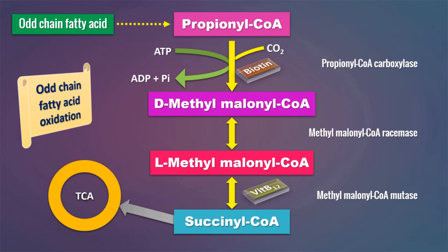So to summarize: odd chain fatty acids not only generate acetyl-CoA, but also yield the shortest odd chain product — the 3-carbon propionyl-CoA. This propionyl-CoA, via propionyl-CoA carboxylase (a biotin-dependent enzyme), is converted to D-methylmalonyl-CoA, which is isomerized to L-methylmalonyl-CoA. L-methylmalonyl-CoA is then converted by methylmalonyl-CoA mutase using deoxyadenosylcobalamin (a coenzyme derived from vitamin B12) to form succinyl-CoA, an intermediate of the citric acid cycle. Therefore, odd chain fatty acids are glucogenic because they can enter the citric acid cycle through succinyl-CoA.